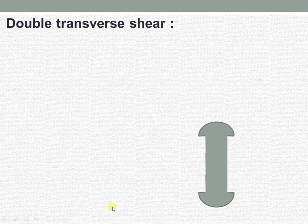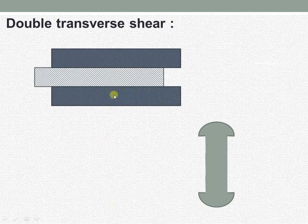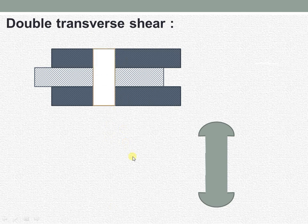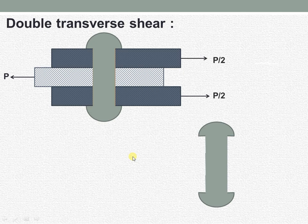Now let us see another example in which we have two plates that we want to connect with the help of an intermediate plate. We drill a hole, place the steel bar through, and hammer from the top and bottom to form the rivet. The middle plate is subjected to a tangential force P, and half of the load is shared by the other two plates as shown.